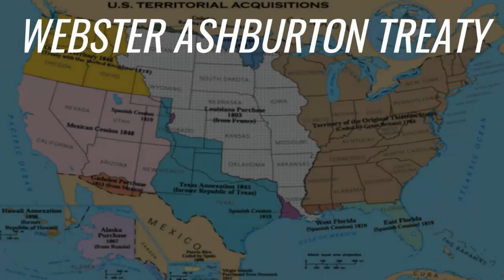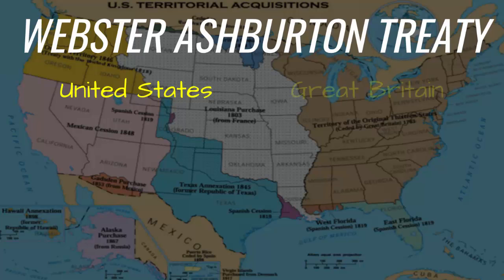The United States better defined its borders in the north with the Webster-Ashburton Treaty. This treaty was an agreement between the United States and Great Britain in 1842.